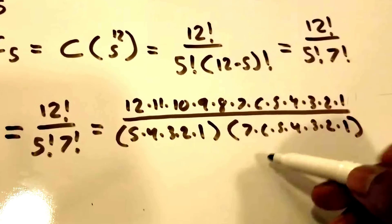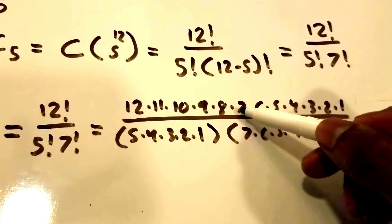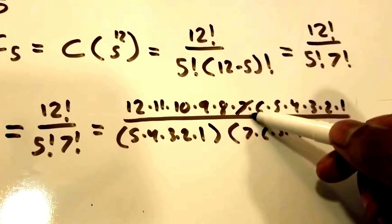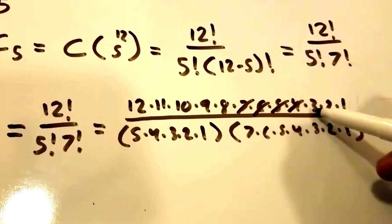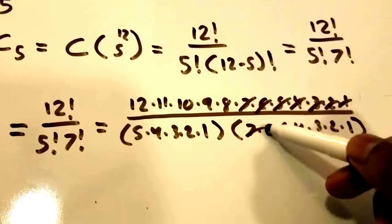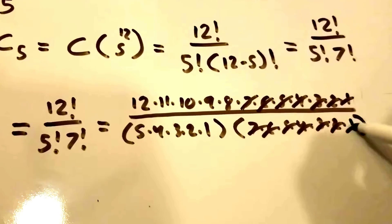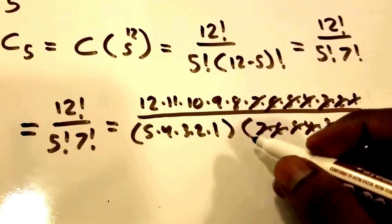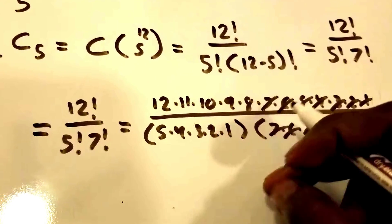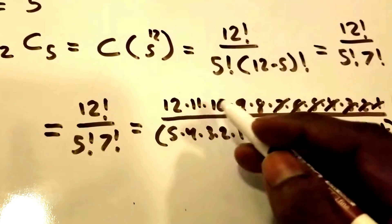What we can see here is we can cross out the 7 factorial on the top - 7 times 6 times 5 times 4 times 3 times 2 times 1. They divide out to equal 1, so all we have left are these numbers here.